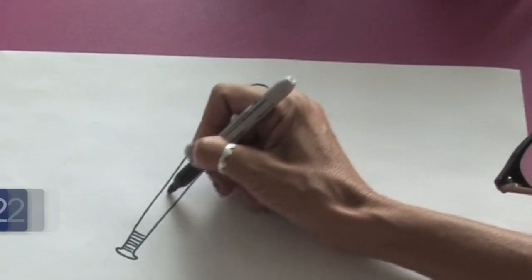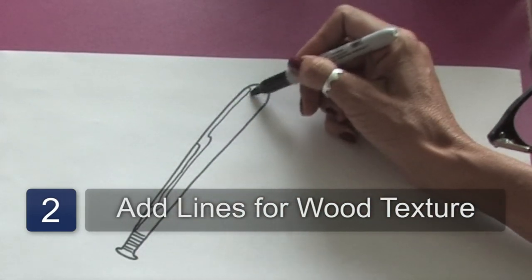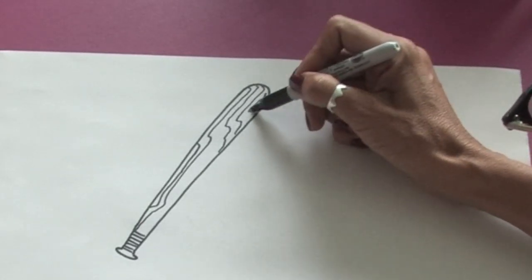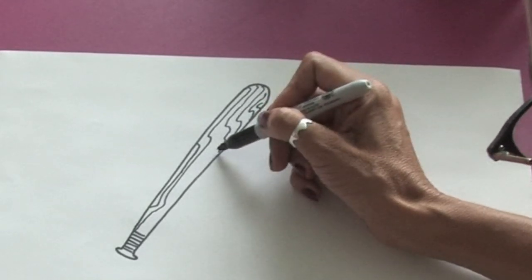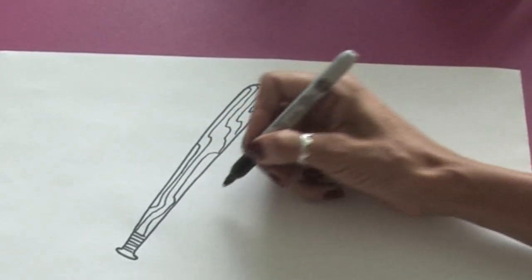Now, I like the old wooden bats. And if you want, you can just put a few quick lines like this just to depict the wood grain in the bat. It's quite simple. Just bring the lines down.